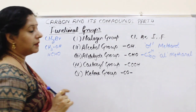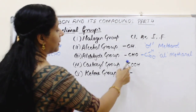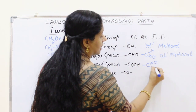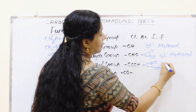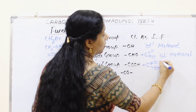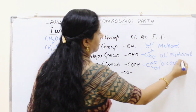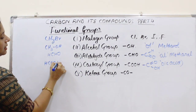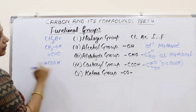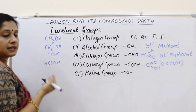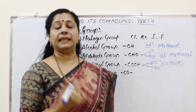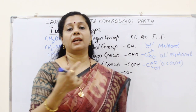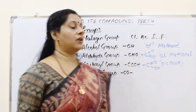Next comes the carboxyl group, also called the acid group. Its bonding is: C double bond O, single bond OH. When this group is present, the name ends with '-oic acid'. We write HCOOH — it is methanoic acid. Similarly we get ethanoic acid, propanoic acid, butanoic acid, pentanoic acid, and hexanoic acid.